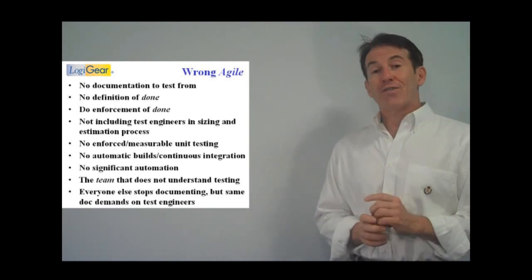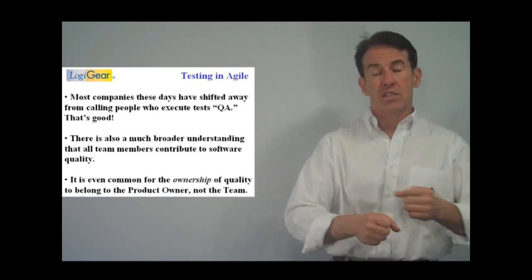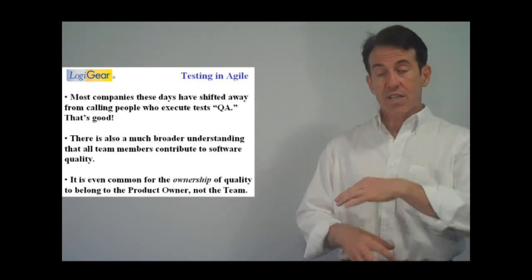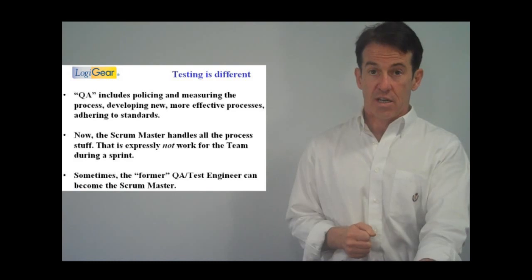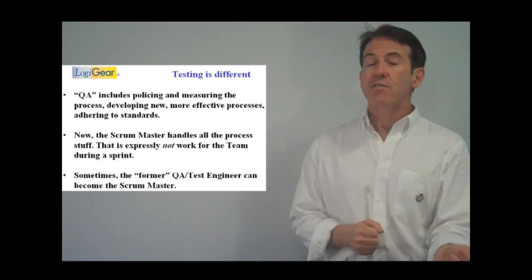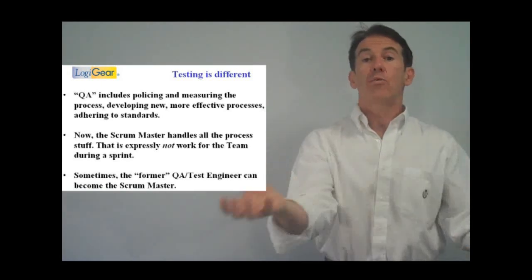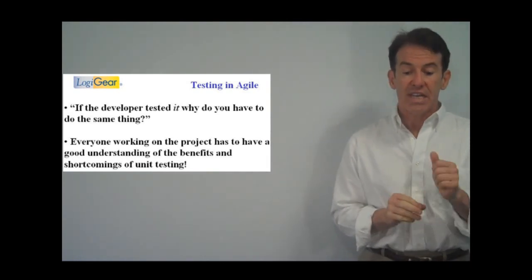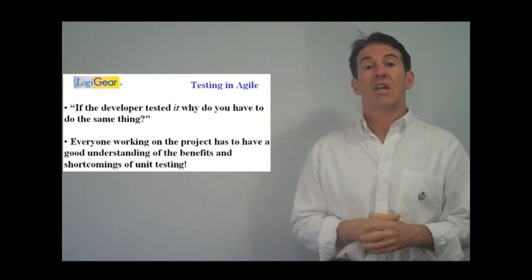And it is also wrong Agile for everybody on the team to stop documenting, right? No more requirements documents, no more database schemas, no more design docs, no more tech specs, but still expect the testers to document every test case in your test case manager. Whatever test case manager you're using, if there is still a demand on the testers to document all our tests in that test case repository, that's actually wrong Agile. Everybody else on the team will be able to work faster. Everybody on the team will be able to do more design as you go, except us. And I've sadly seen this in many organizations where the need for the test team to continue to use that test case repository the way that they used to before we were Agile will kill the test effort. So that's wrong Agile.